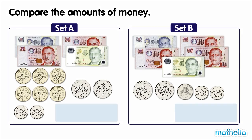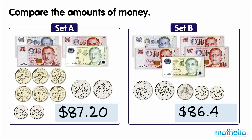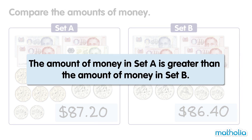Compare the Amounts of Money. In Set A, there is $87.20. In Set B, there is $86.40. $87.20 is greater than $86.40. The amount of money in Set A is greater than the amount of money in Set B.